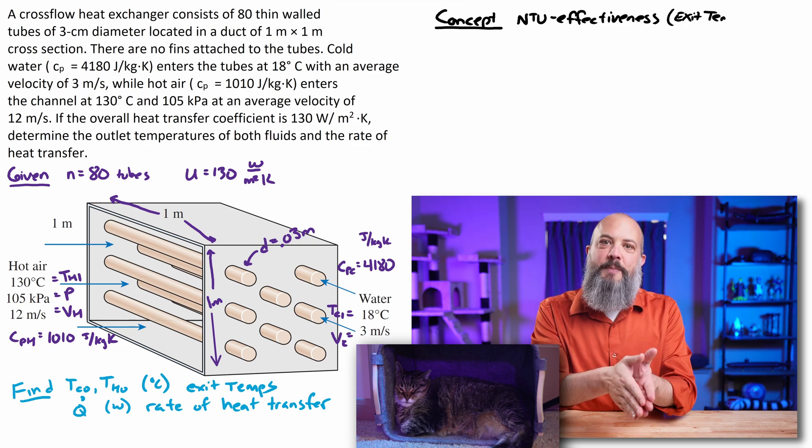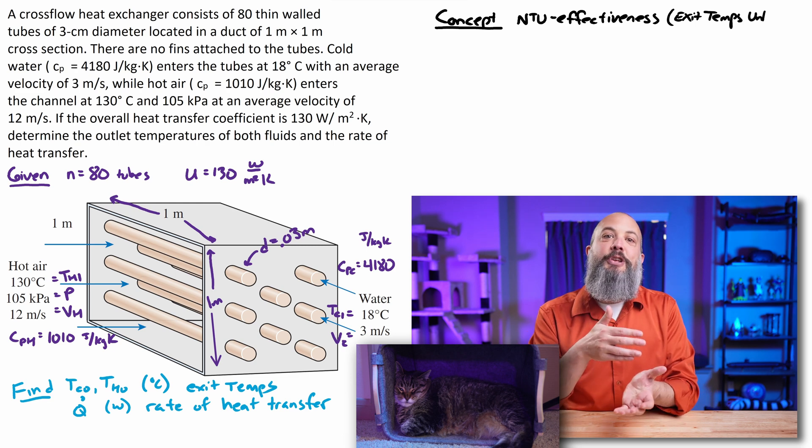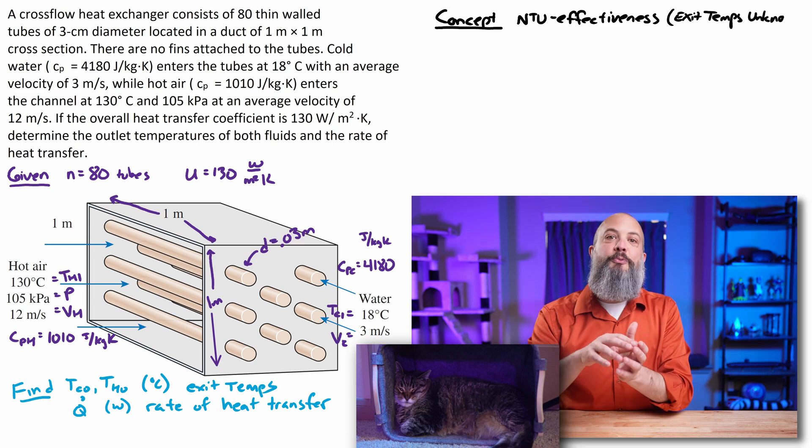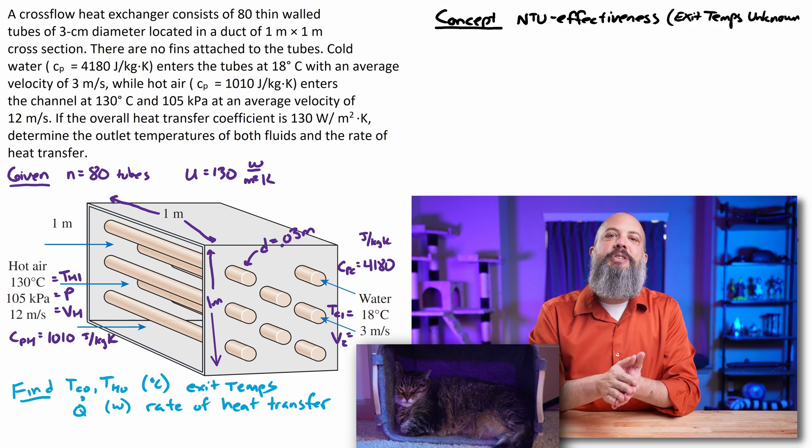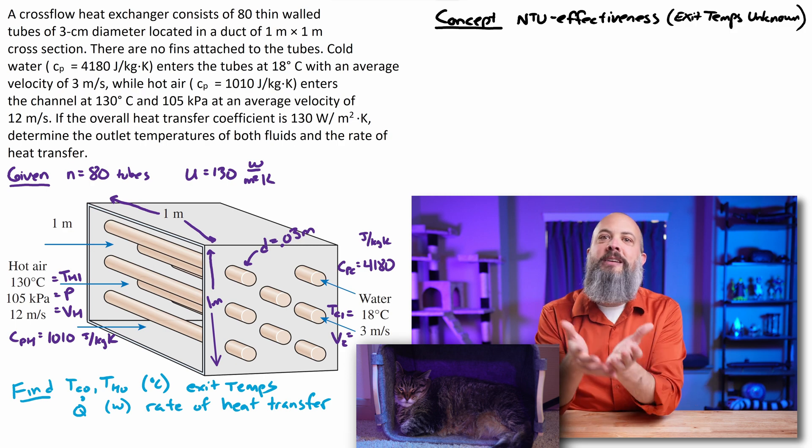This NTU effectiveness method is used when you know your heat exchanger. In this case, we know the number of tubes and we know the overall heat transfer coefficient, but you want to find the exit temperatures for the given heat exchanger.